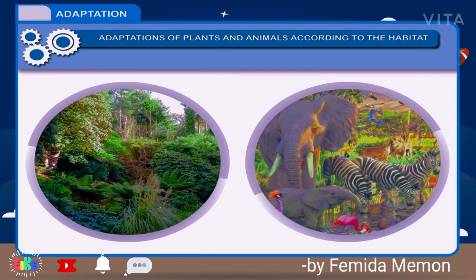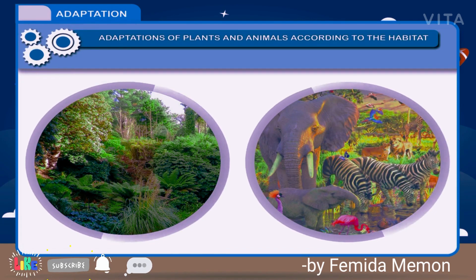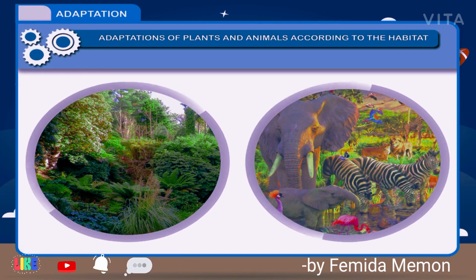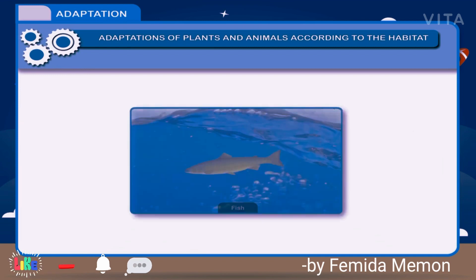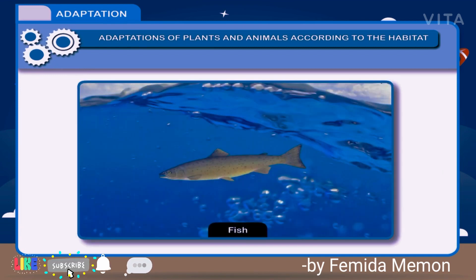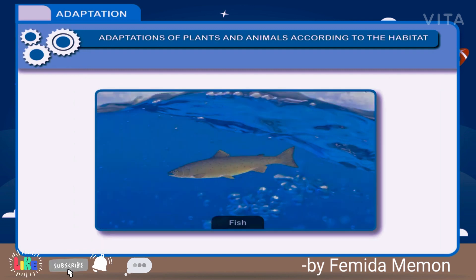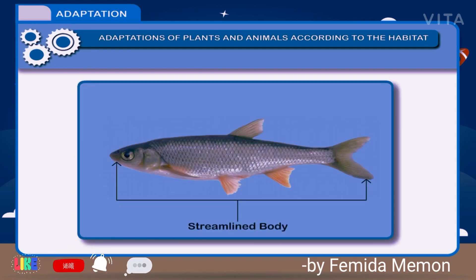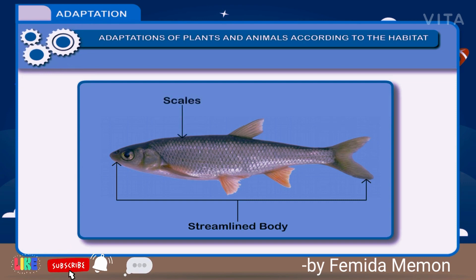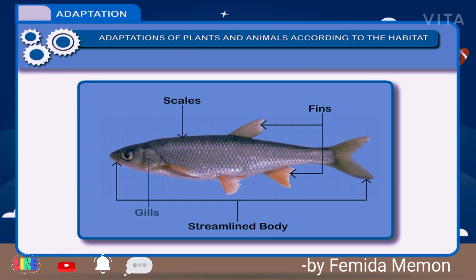Plants and animals adapt themselves to survive in a particular environment, and have different features to do so. For example, a fish has the following features suitable for aquatic life: 1. Streamlined body which helps in movement. 2. Scales which protect the internal parts. 3. Fins and tail help in swimming. 4. Gills help the fish to take in oxygen.